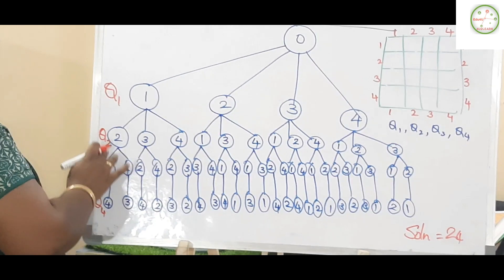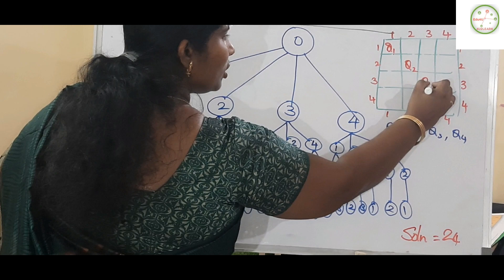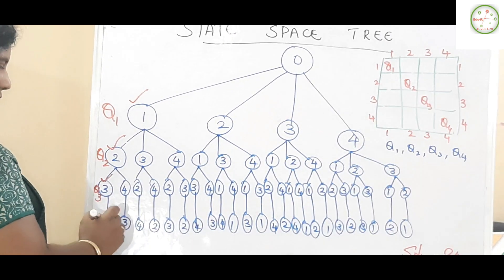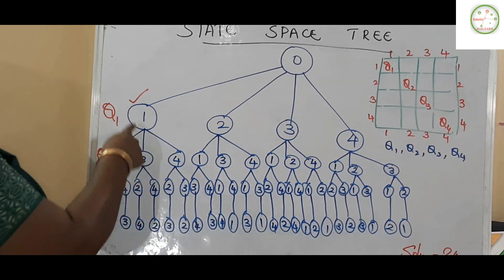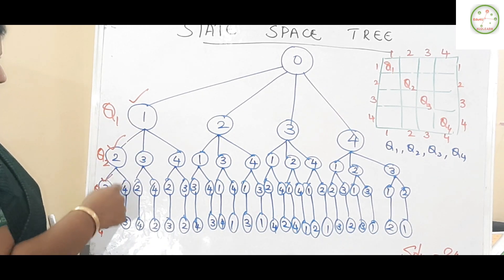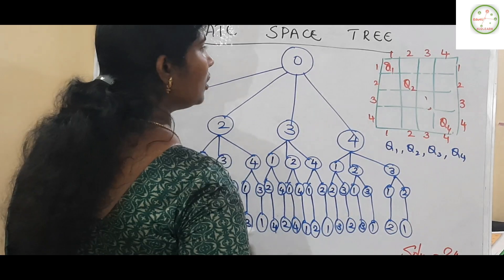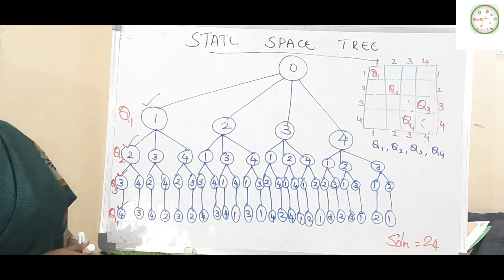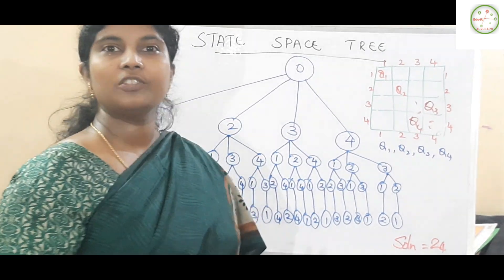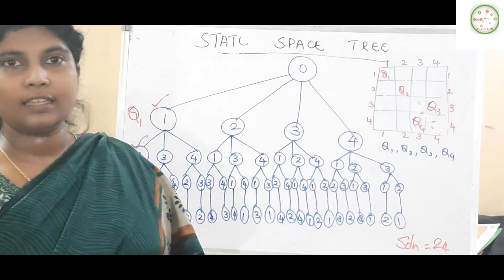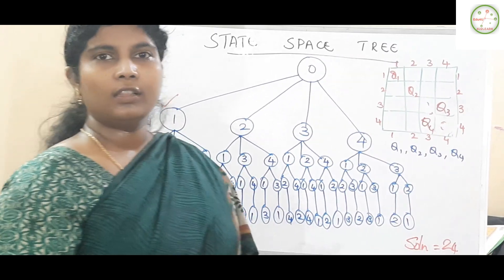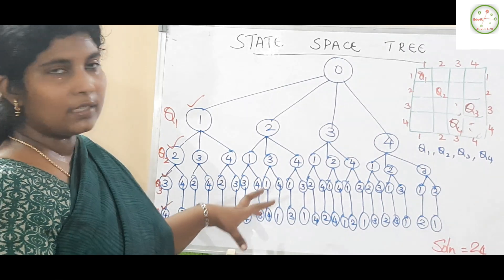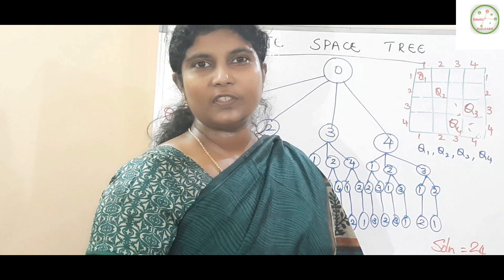The solutions range across Q1, Q2, Q3, Q4. For example: Q1 placed in position 1, Q2 in position 2, Q3 in position 3, Q4 in position 4 is one solution. Q1 in position 1, Q2 in position 2, Q3 in position 4, Q4 in position 3 is the second solution. That is how you go about getting each solution. This is an exhaustive search — we have all possible solutions, and based on this, whichever solution satisfies the constraint is picked up as a promising node.